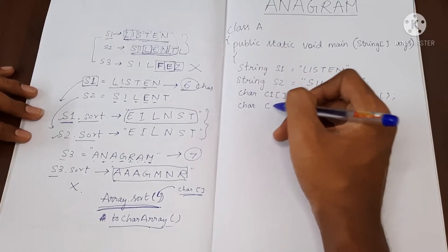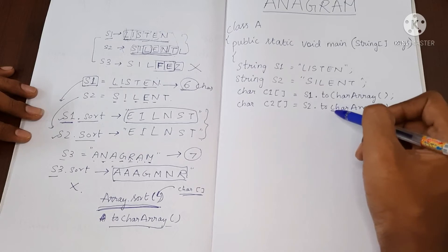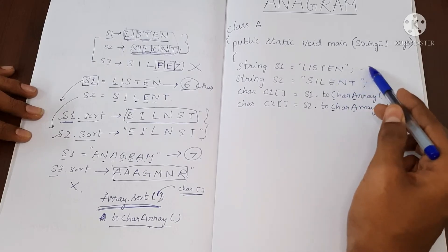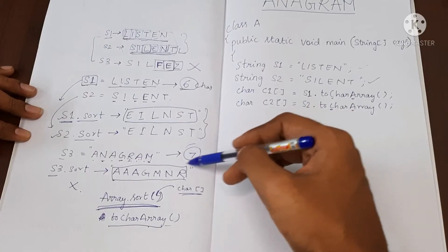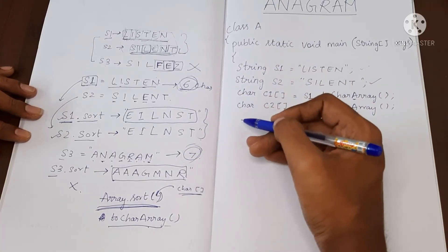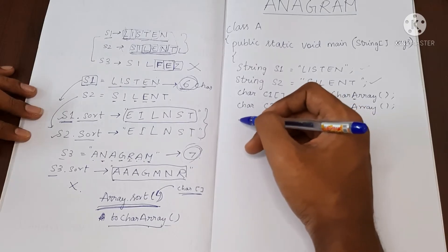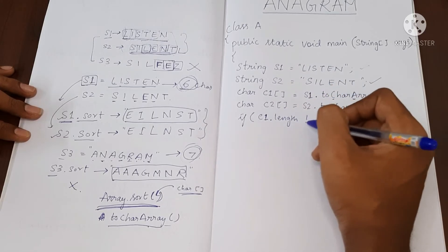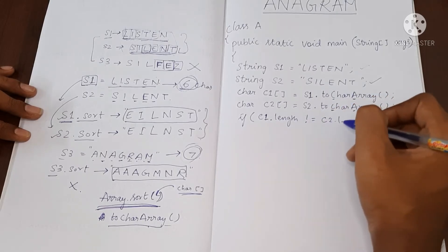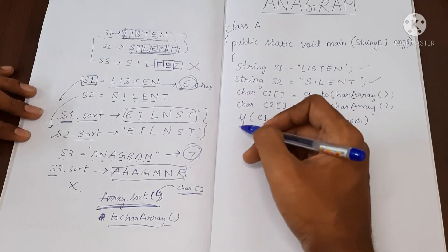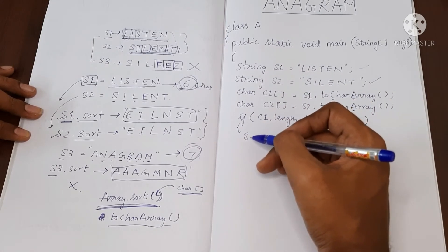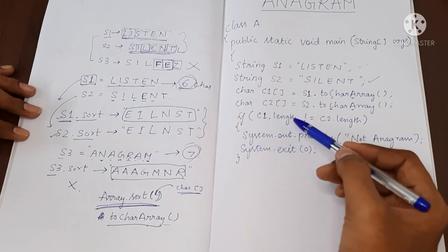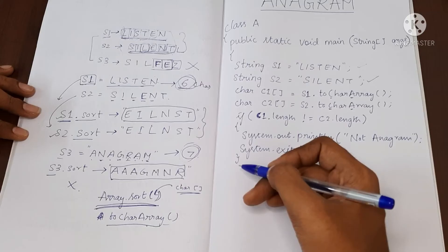Now we'll create one more character array C2 for S2 — note that the C and A in CharArray are uppercase. Now we have character arrays for both strings. Next we'll check if both their lengths are the same. If C1.length is not equal to C2.length, we'll print that they are not anagram and exit the program, since different lengths means they cannot be anagram.